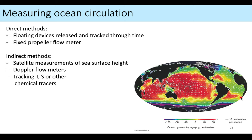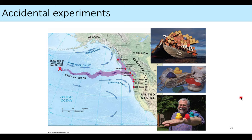How do we measure ocean circulation? There are direct and indirect methods. You can track something floating on the surface to see where it goes, or use instruments in the ocean to measure flow and direction. Indirect methods include using satellites, Doppler flow meters, or tracking temperature and salinity to see how water masses are moving.